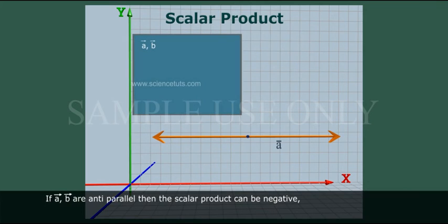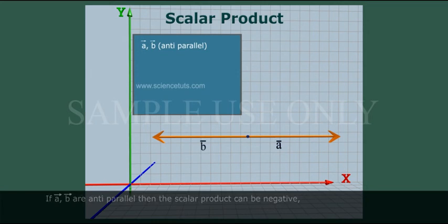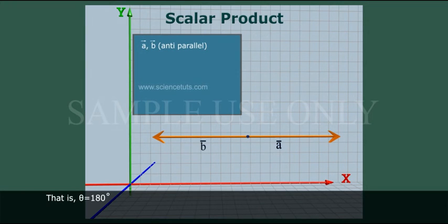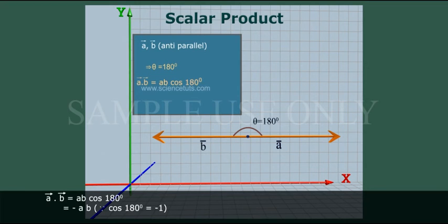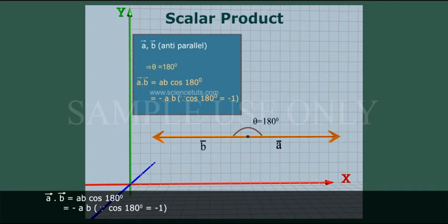If A bar and B bar are anti-parallel, then the scalar product can be negative. That is, A bar dot B bar is equal to AB cos 180 degrees, which is equal to minus AB, since cos 180 degrees is equal to minus one.